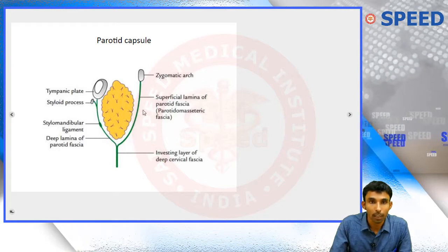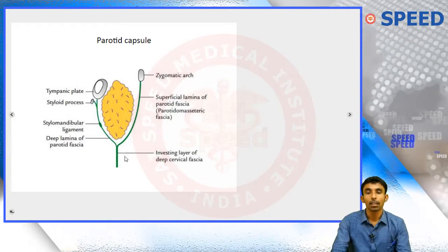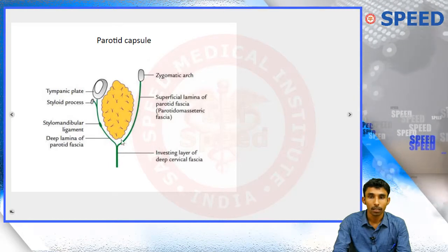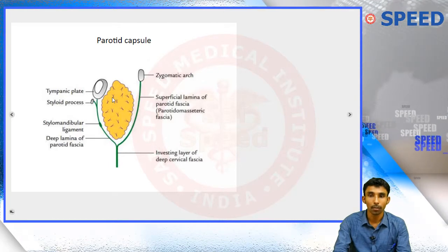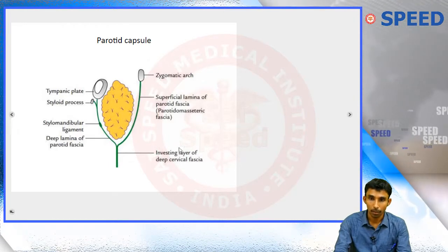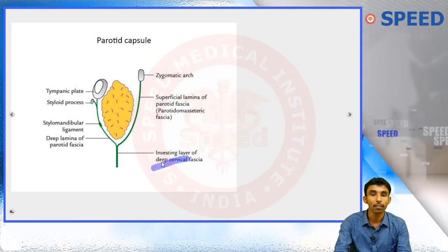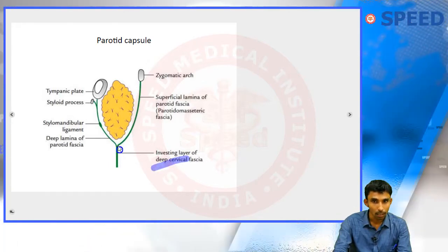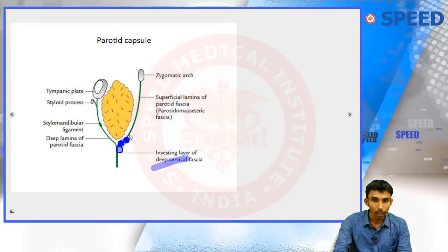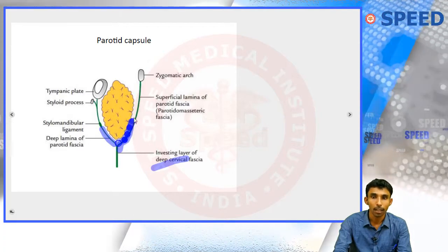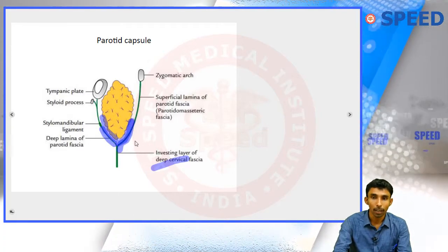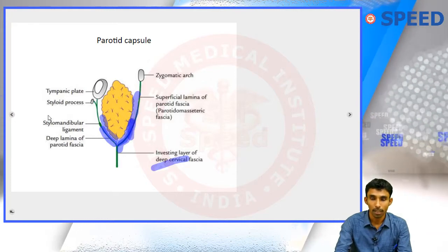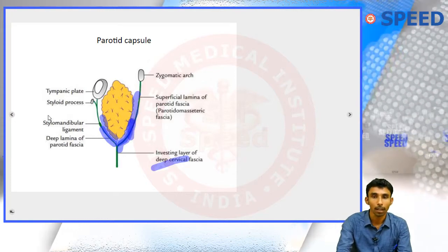The parotid gland is covered by two layers of the parotid capsule, also called the parotid sheath. This capsule is derived from the investing layer of the deep cervical fascia, which splits to enclose the parotid gland both in front and behind, forming two layers: the superficial lamina and the deep lamina.